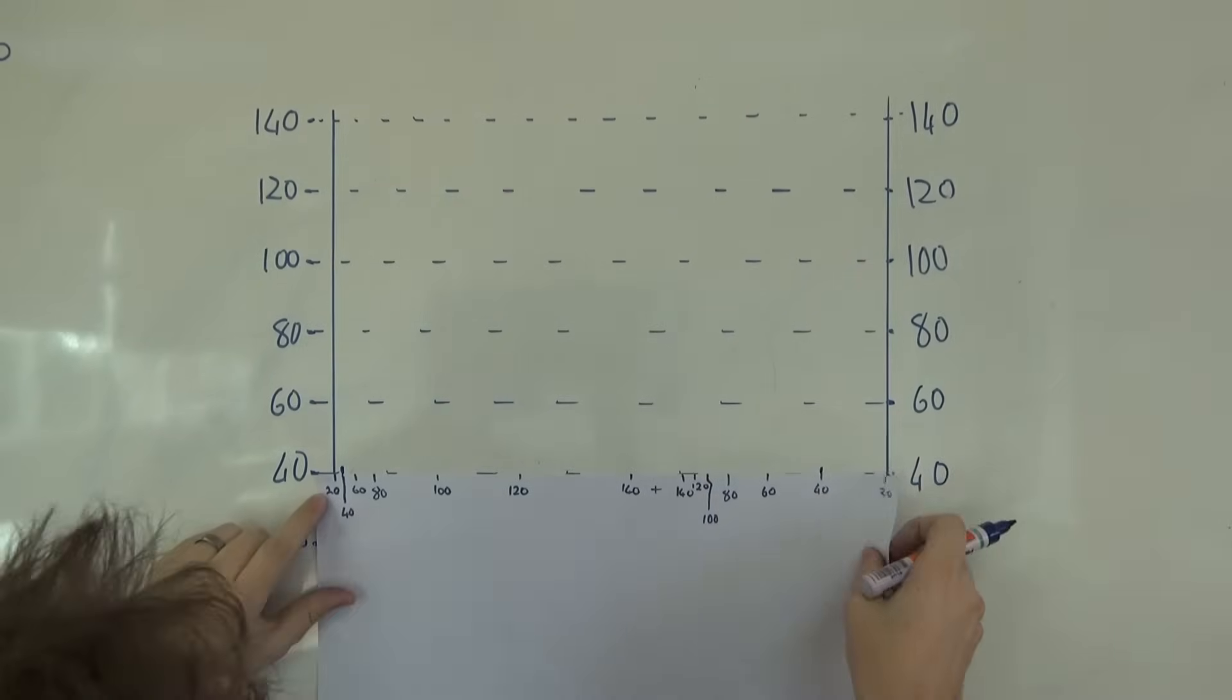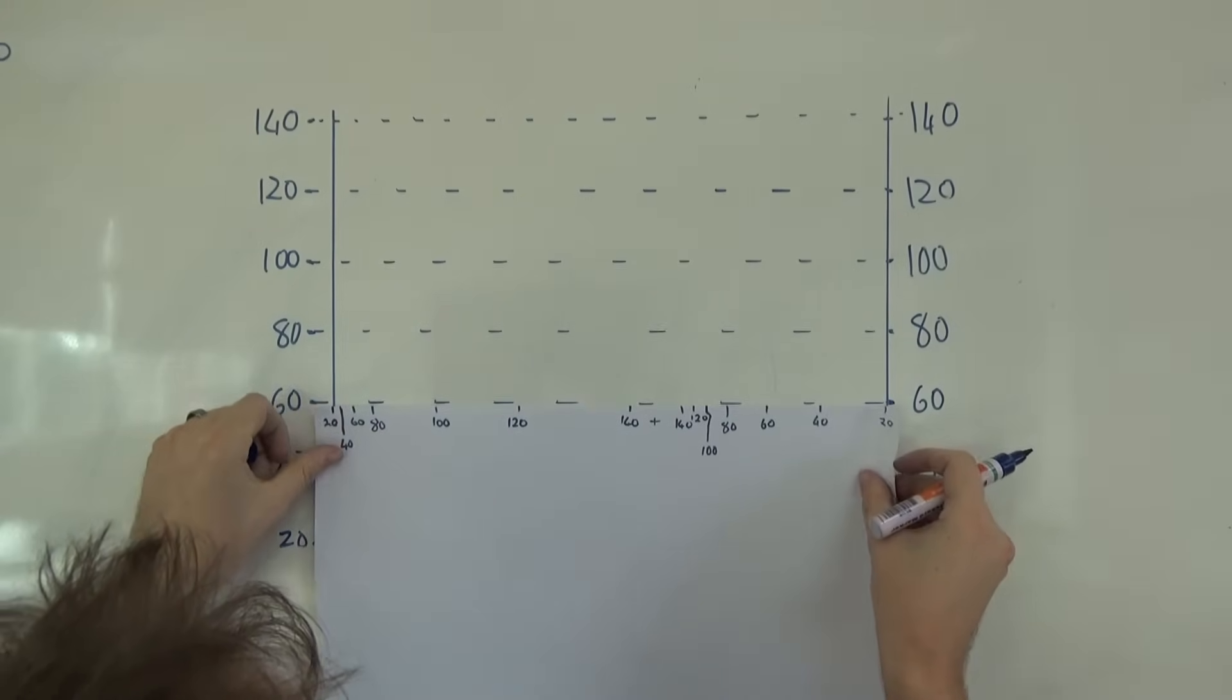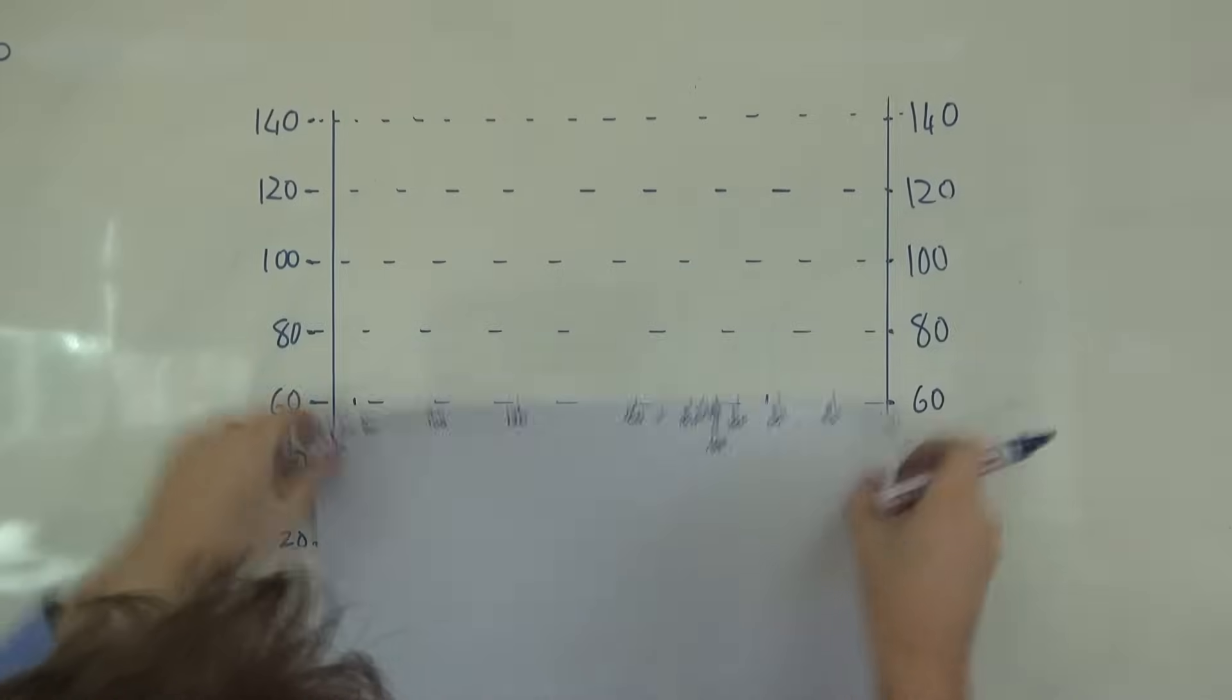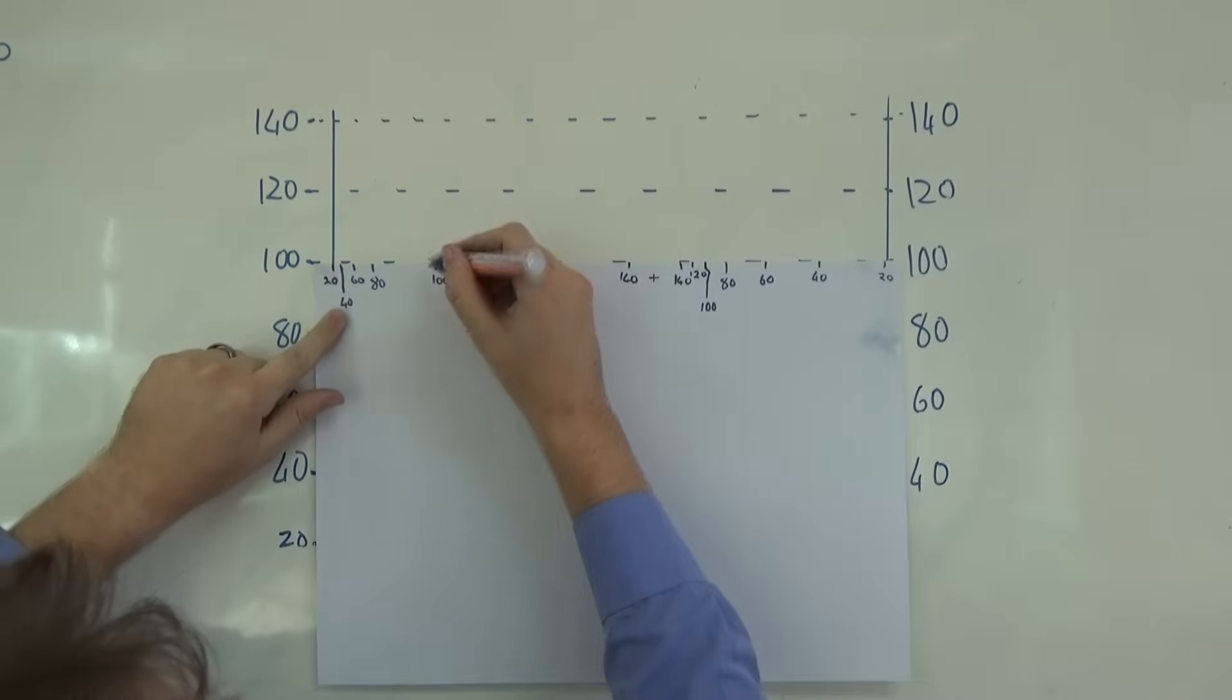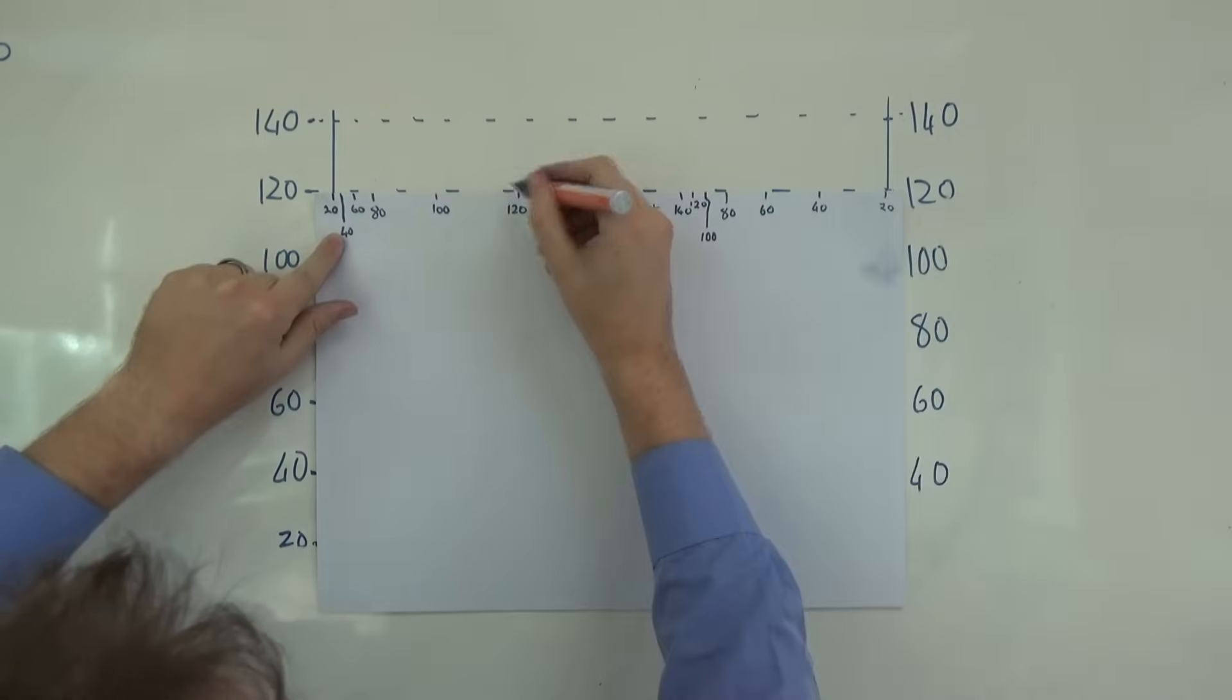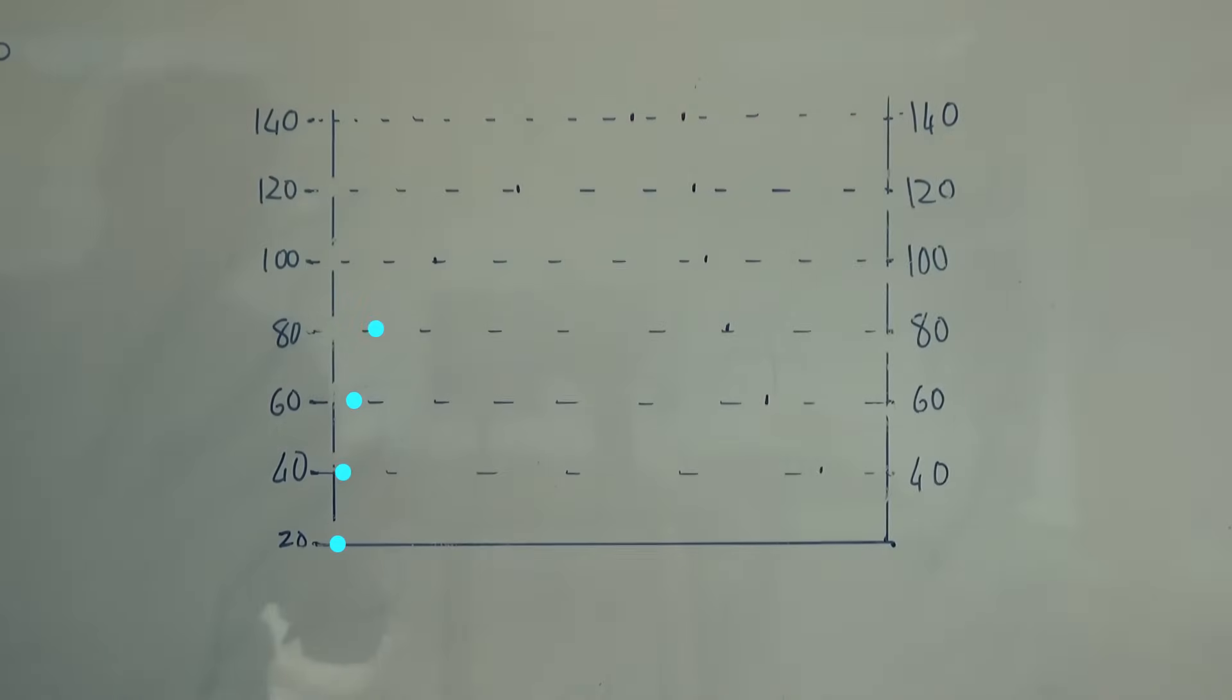And then we move the paper up once more up to 60. So now we are simply going to connect these markers. Here's 20.